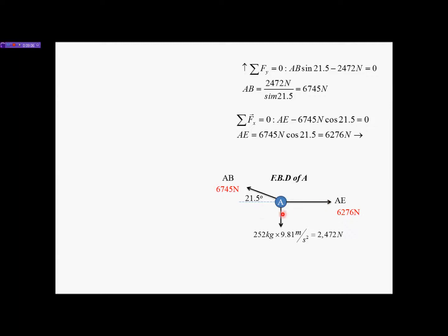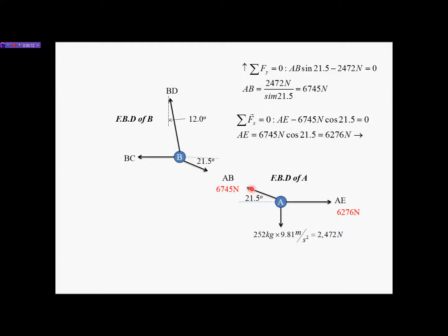Now we move to point B and draw the FBD. Cables must be in tension, so all force arrows act away from B. The horizontal angle at B equals 21.5° by alternate interior angles. We have one known force and two unknowns, so we can solve. However, the 12° angle for cable BD is measured from the vertical, not the horizontal — we cannot treat it as a horizontal angle.